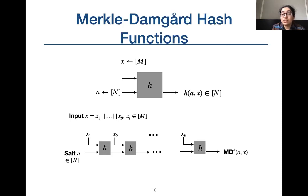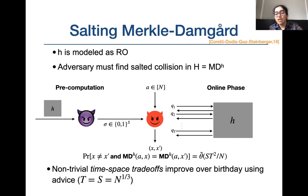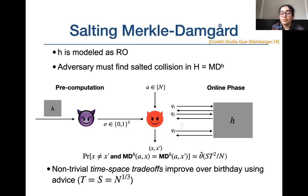MD-based hash functions are salted hash functions. The actual construction of MD-based hash functions can no longer be modeled by a monolithic random oracle. Instead, we model the compression function as a random oracle. Attacks against hash functions modeled as a monolithic random oracle are equivalent to finding one-block-long collisions in MD-based hash functions where the compression function is modeled as the random oracle. The adversary can again be thought of as a two-stage algorithm.